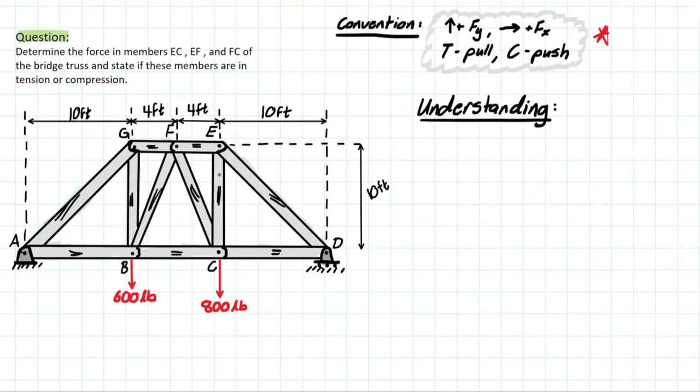But this problem is going to be talking about a method called the method of sections. It's also called the cutting method, and it is just a way of isolating members inside of a truss so that you can solve for individual members efficiently, rather than solving the entire truss using method of joints.